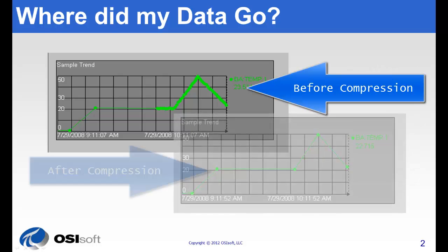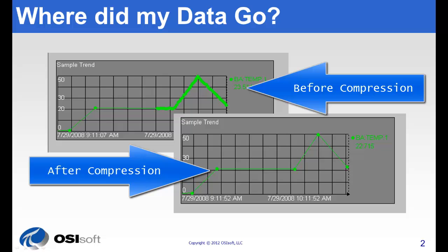Have you ever refreshed a trend only to see some data points disappear or seem to disappear? What you're seeing is the effect of exception and compression.